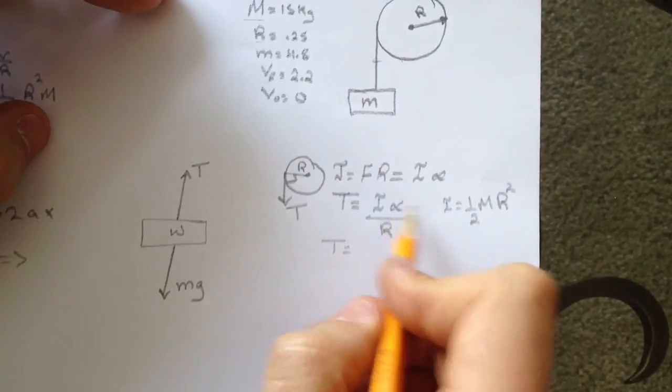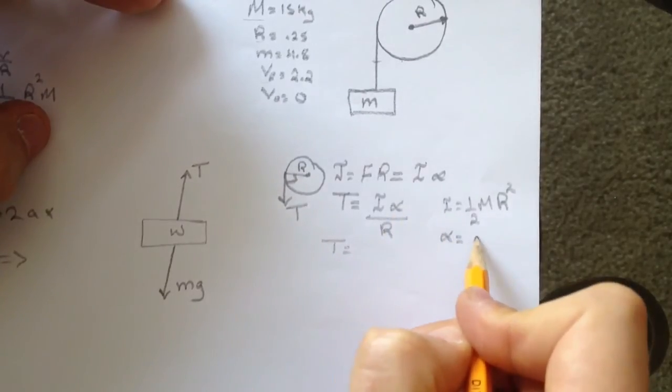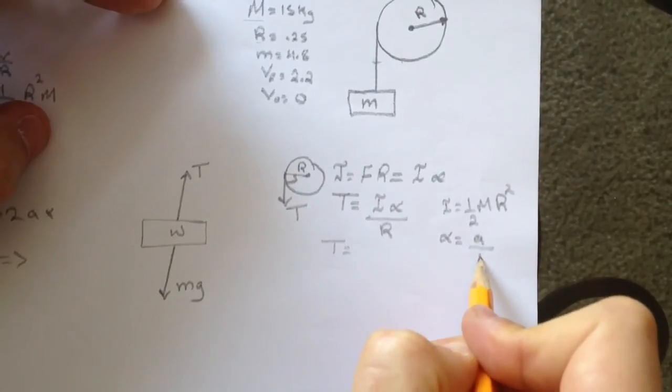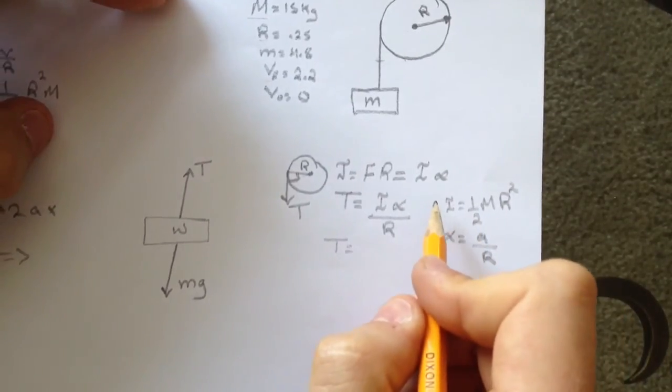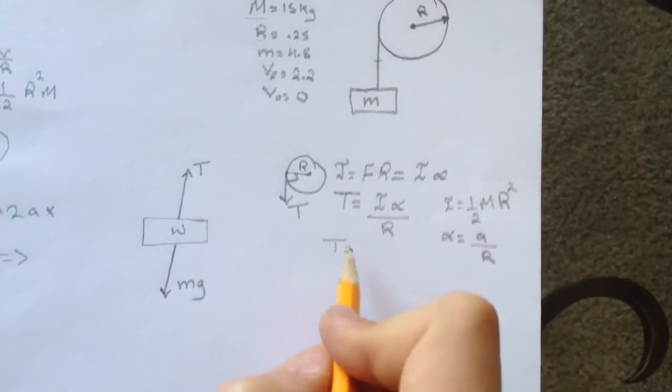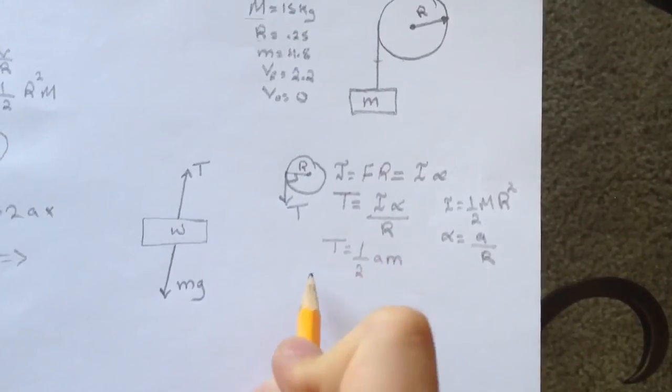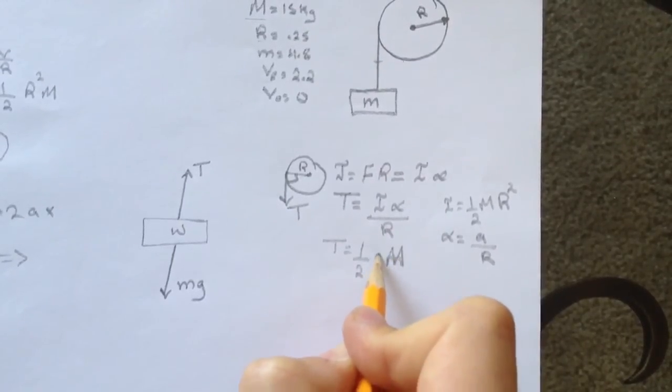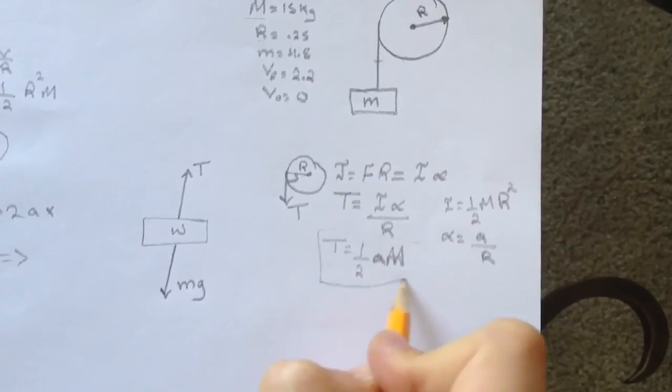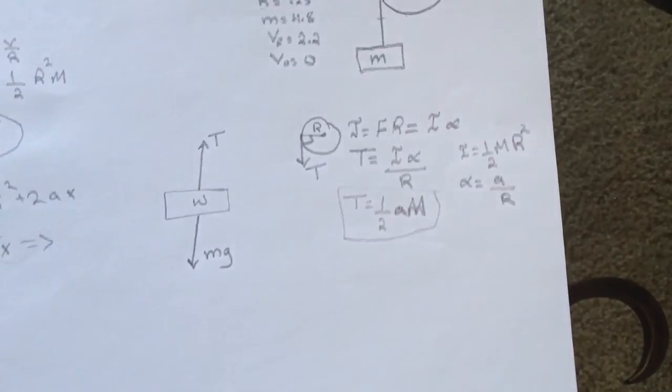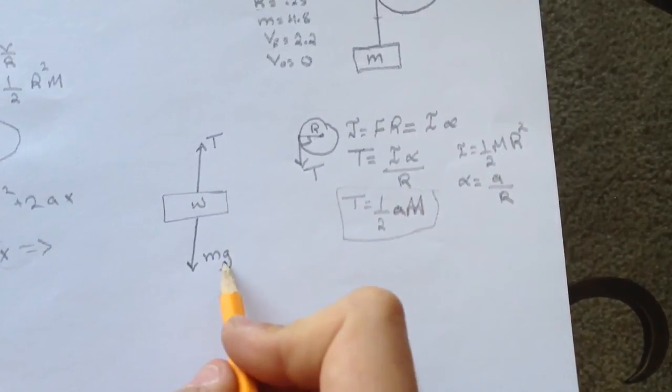The angular acceleration is a over r, so the r's will cancel and we'll be left with T equals half aM.